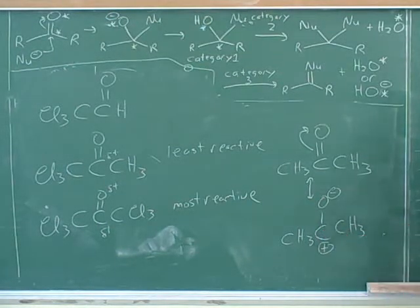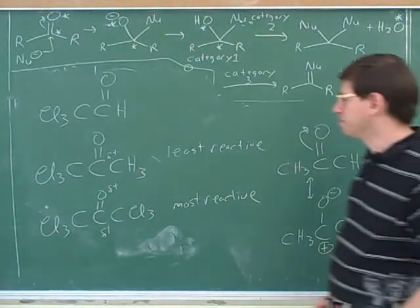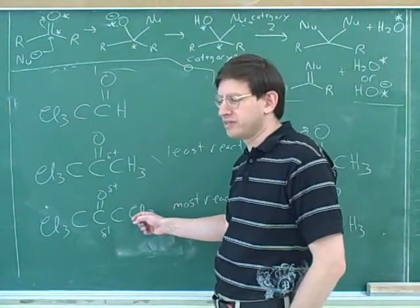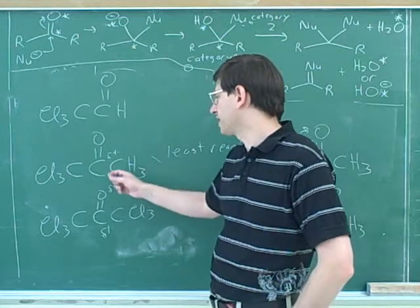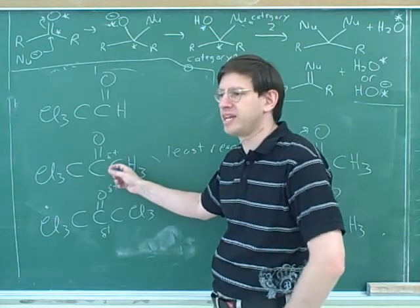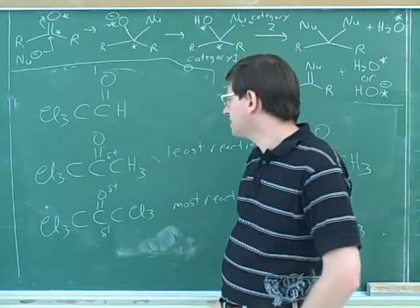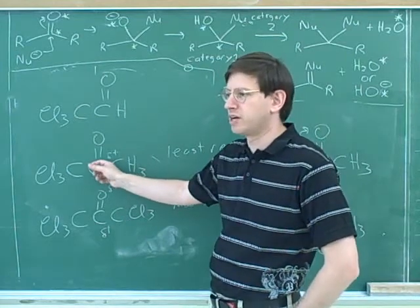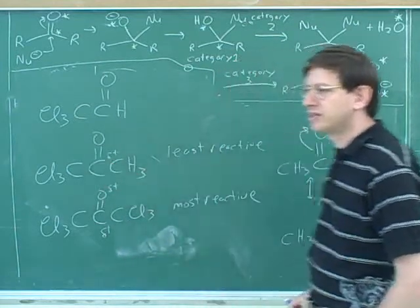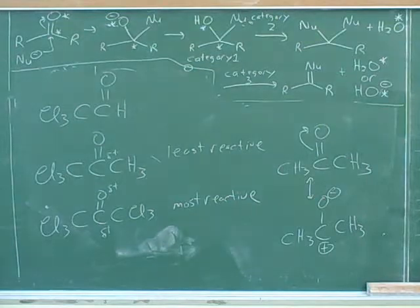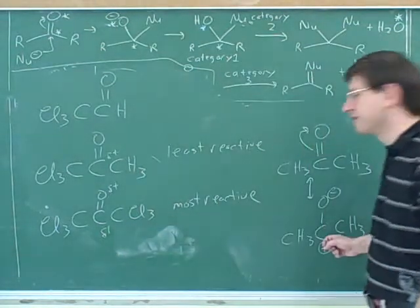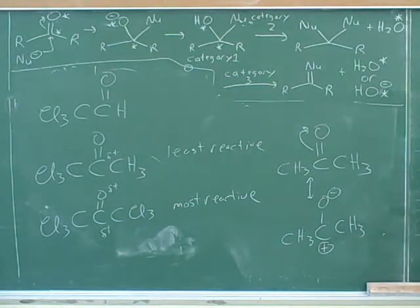And that also reinforces the idea that if we put more electron withdrawers around it, it'll destabilize it further, whereas if we put electron donating alkyl groups, that'll help stabilize it somewhat. So we can see that there's both an induction and a resonance argument for why the carbonyl carbon is electrophilic. That's good to know about both of those. Usually it's simpler just to focus on the delta positive so you don't have to actually draw this resonance structure, but it's good to know that it's there.